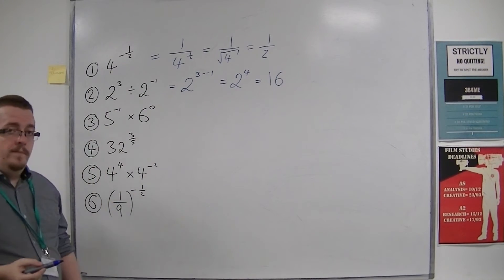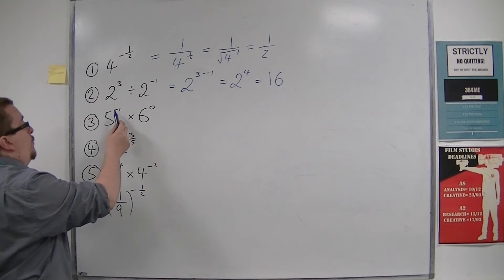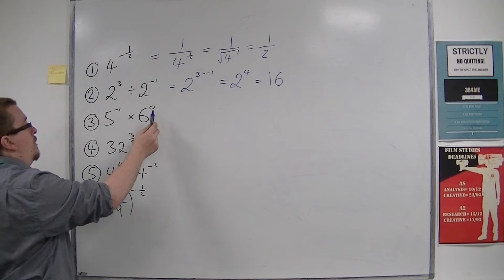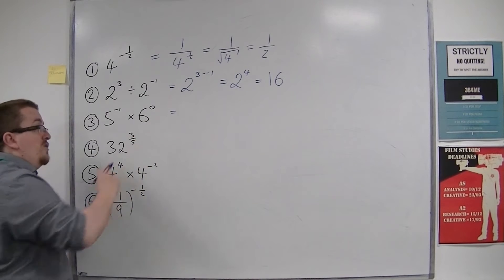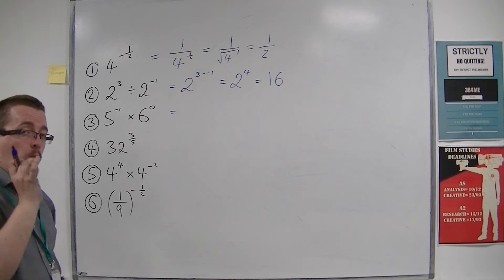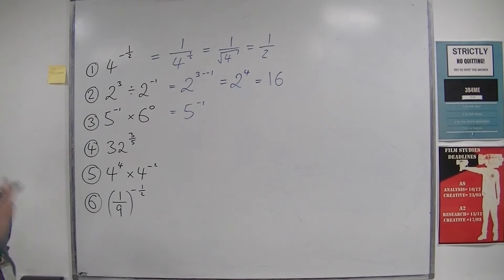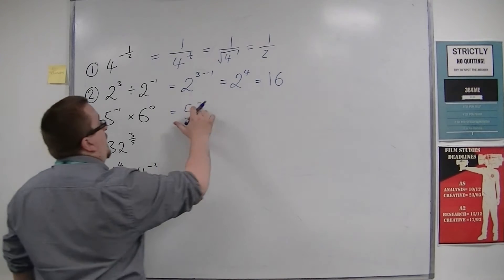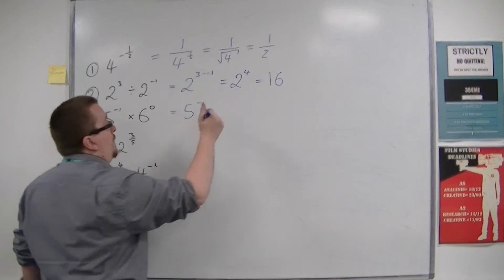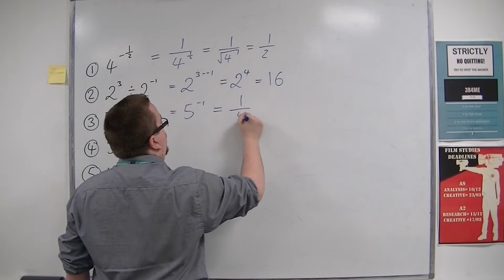Number 3, we have 5 to the minus 1 times 6 to the power of 0. Now 6 to the power of 0, any number to the power of 0 is 1. So this is the same as 5 to the power of minus 1 times 1, so just 5 to the power of minus 1. Now that negative sign means 1 over, so this is 1 over 5.